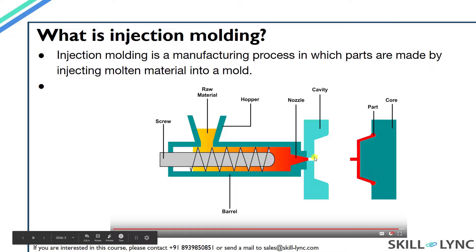The molten material fills the region between the core and the cavity, where it takes the shape of the mold. The core is the convex region which forms the inner surface of the component being molded — it is also referred to as the male portion of the mold. The cavity is the depression or concave region which forms the outer surface of the component — it is also referred to as the female portion of the mold. The material filled between the core and the cavity is allowed to cool so it solidifies, and then the part is ejected from the mold.